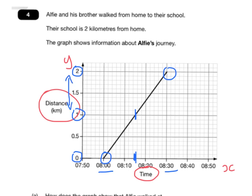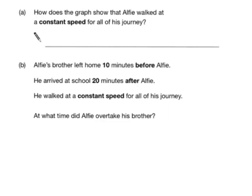It's really important to try and understand the graph before you answer the question. So how does the graph show that Alfie walked at a constant speed? A good answer is that it's a straight line, or the angle is the same, or the gradient is the same. You could also say that between 8 and 8:15 he walks 1km, and between 8:15 and 8:30 he walks another kilometre, so that shows he's travelling at a constant speed.